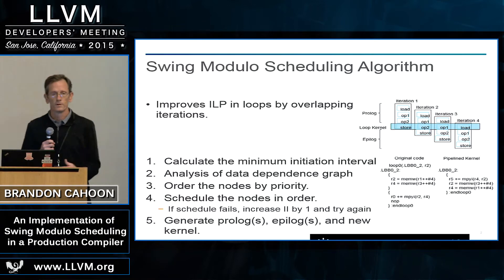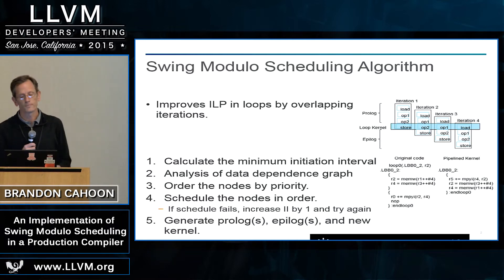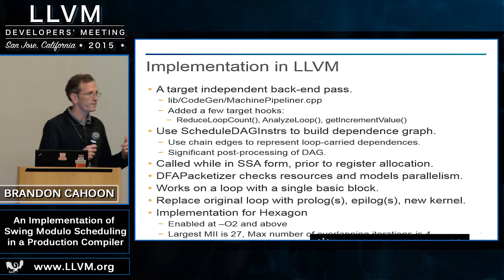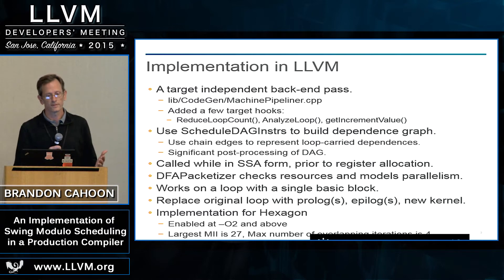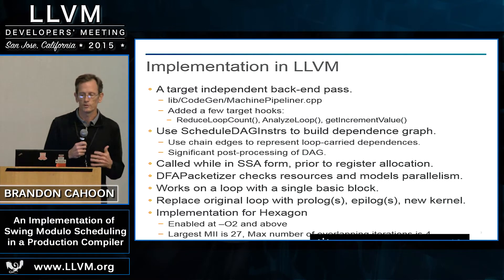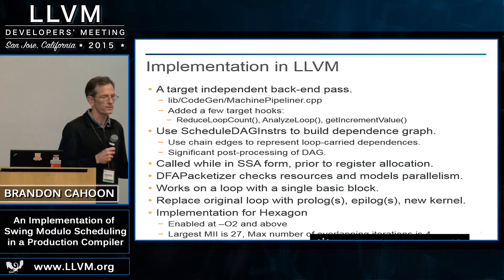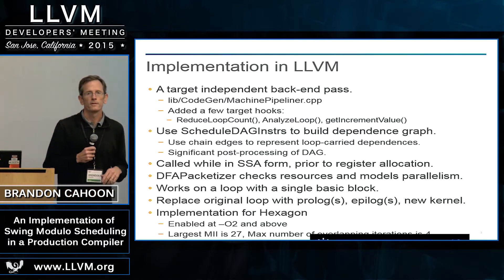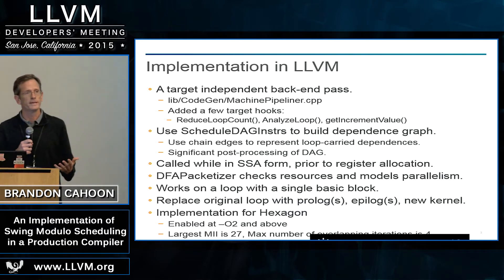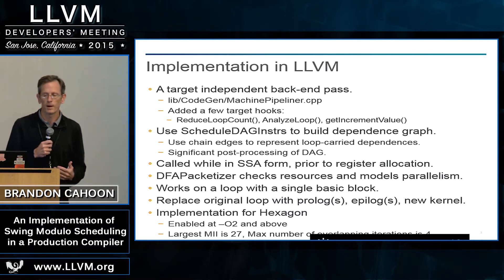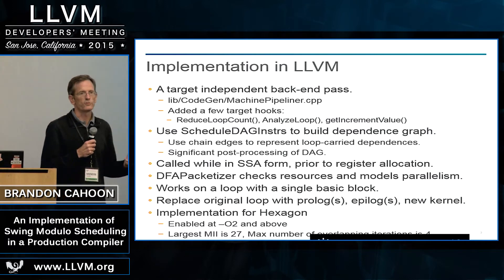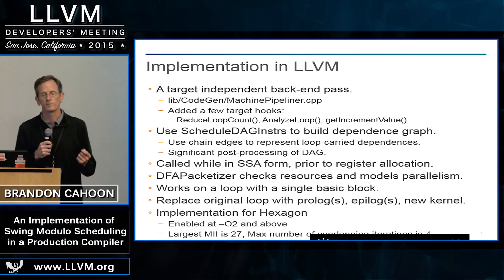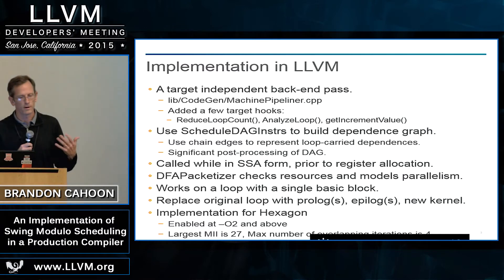Once you successfully pipeline a loop, you generate your prolog, your epilogue, and your new kernel. We've implemented this in LLVM as a target-independent back-end pass — it's a file in libcodegen called machine pipeliner. Most of the software pipeliner code is there. There are a few target-specific hooks that someone would need to implement if they want to use the software pipeliner, mainly to inform it about the loop structure and what to do when generating the prolog, epilogue, and new kernel.